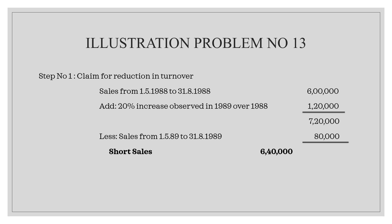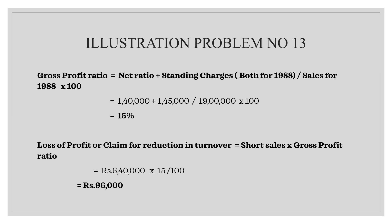So in the format we use: short sales — sales from 1-5-1988 to 31-8-1988 is 6,00,000, so with 20% increase we add 1,20,000, giving a total of 7,20,000 — that is sales from 1-5-1989 to 31-8-1989. Less the affected period turnover of 80,000 — we get short sales that is 6,40,000.